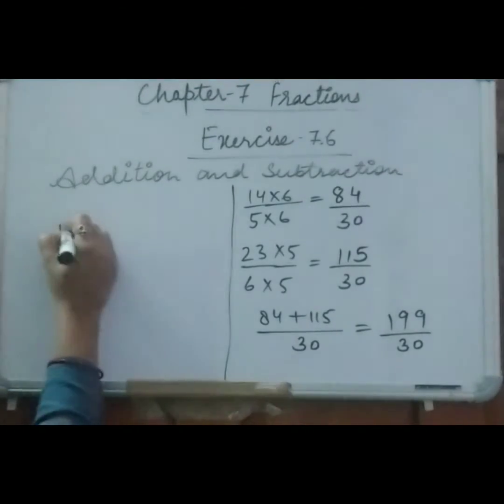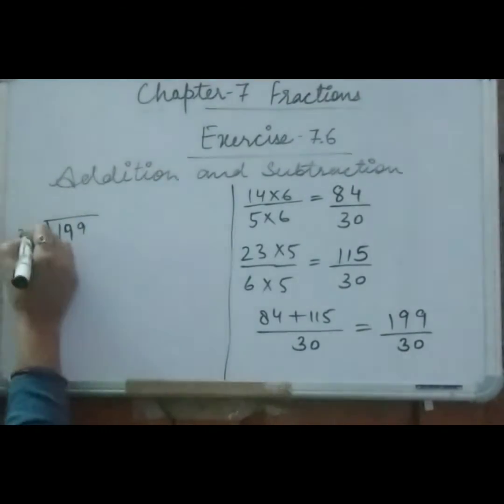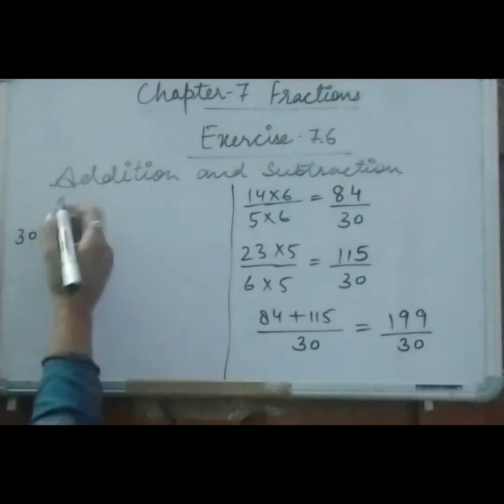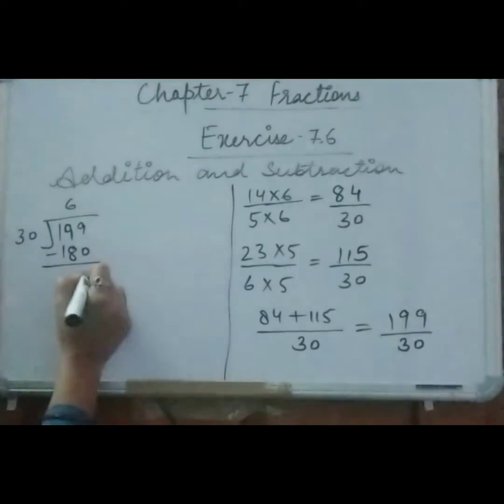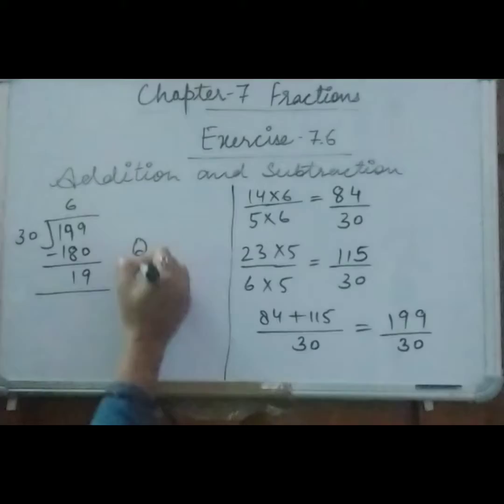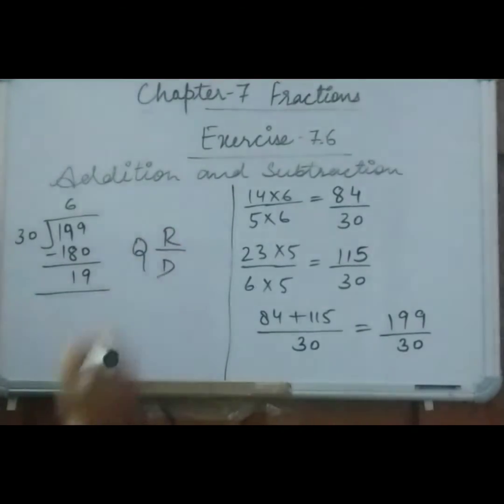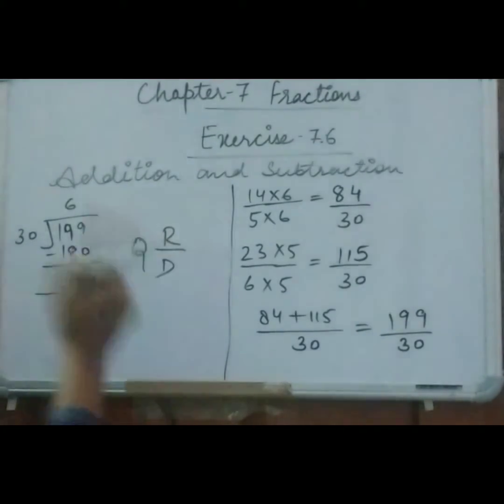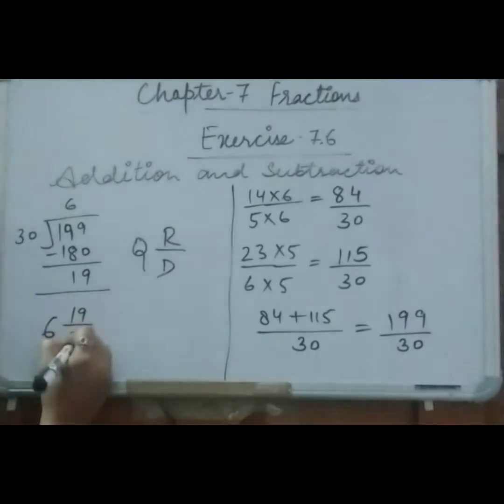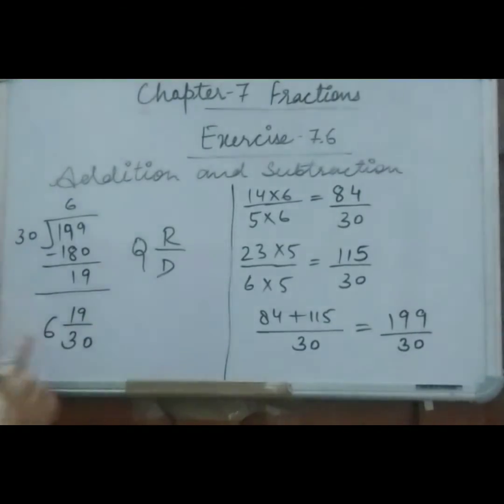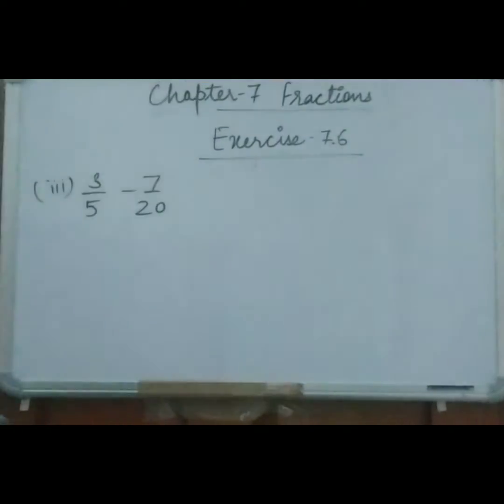This 199 we will convert into mixed fraction. So 30, 6 times 180, this is 9, this is 1. So how we will write it? Q error form D, means quotient whole remainder form denominator, or you can say divisor. So quotient is here 6, remainder is here 19, and denominator will remain 30. So it is 6 whole 19 upon 30.